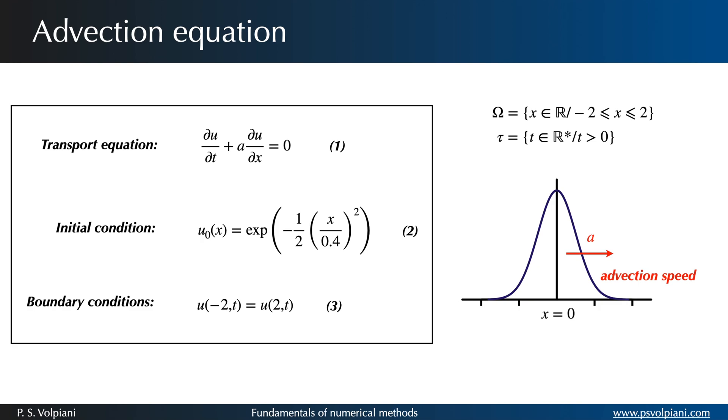In our numerical simulations the advection speed is constant and equal to 0.8. The initial condition U0 is a Gaussian distribution normalized by its value in x equals 0 as shown in this equation. For this problem we have periodic boundary conditions.